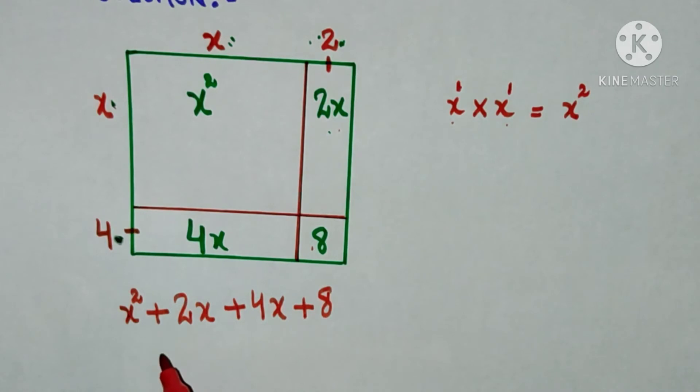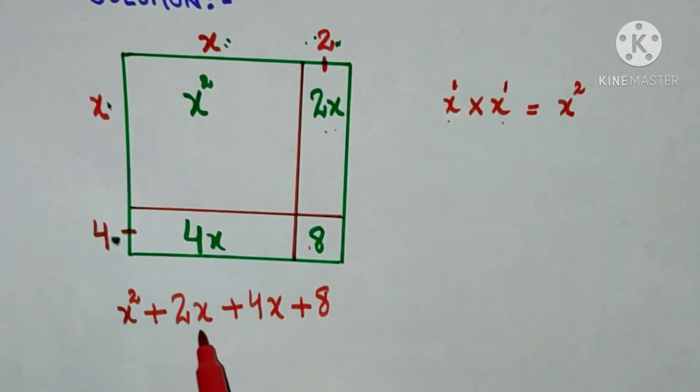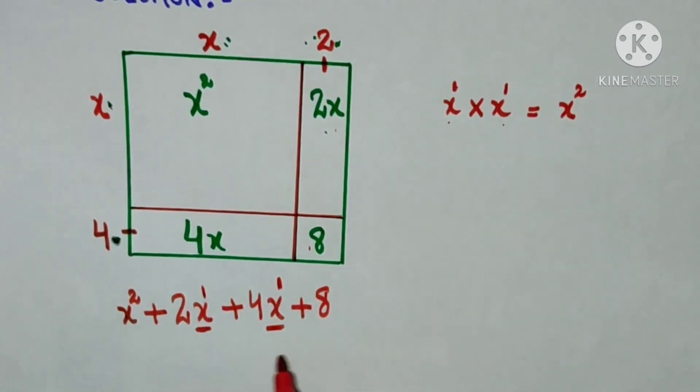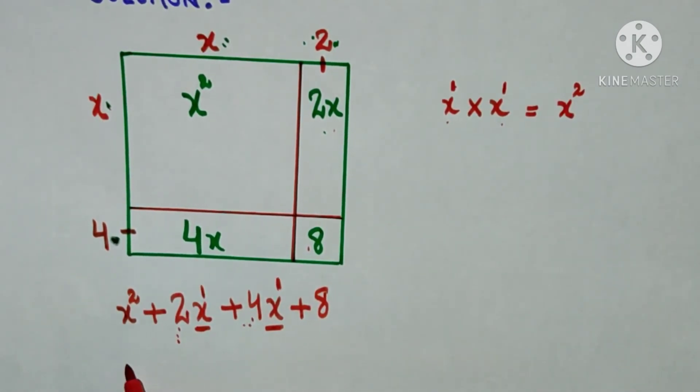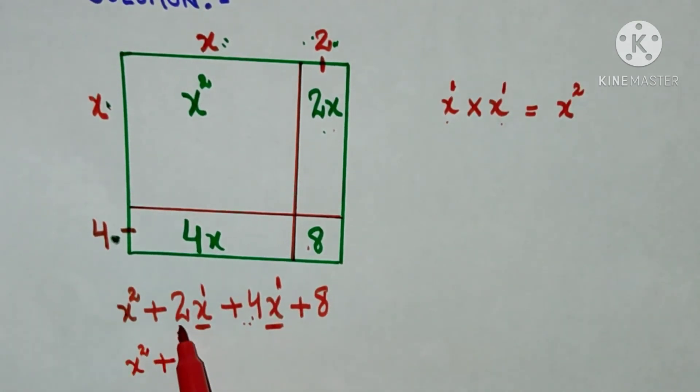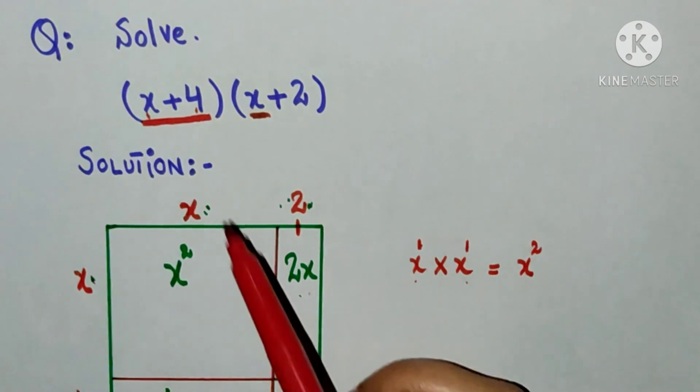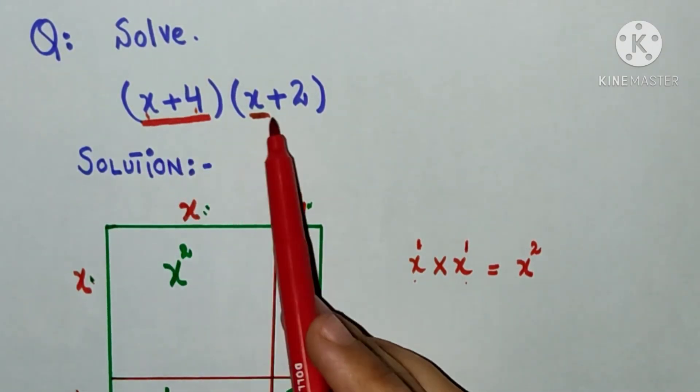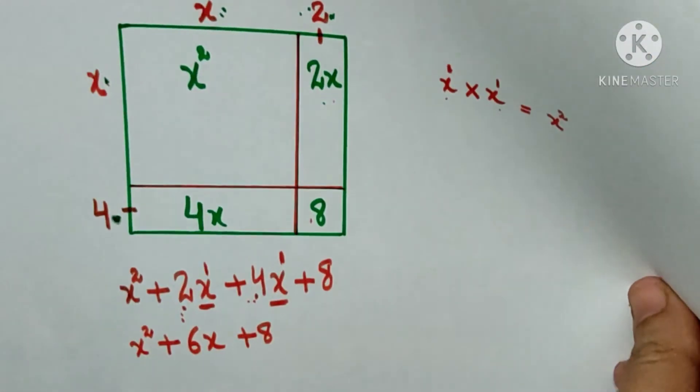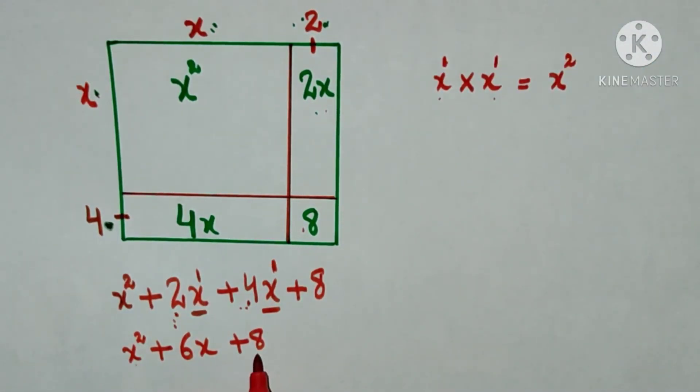What we will do here, I can see over here I have the variable x which has power same, 1 and 1. So I will add the coefficients of these x. x squared plus 2 plus 4 is 6x plus 8. So the answer of this expression, (x+4) into (x+2), is equal to x squared plus 6x plus 8.